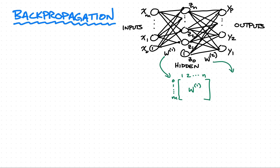The same thing happens when we map the hidden layer to the outputs. The rows here go from zero to N, the zero being the bias in the hidden layer, and then the columns go from 1 to P, where P is the number of outputs.